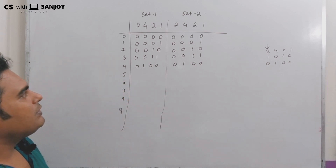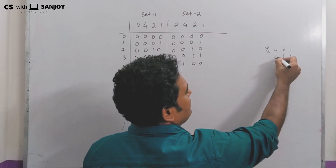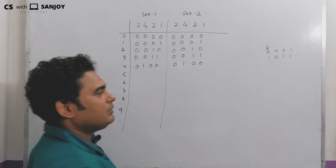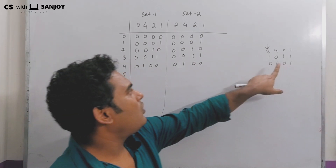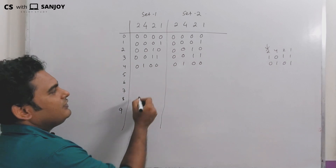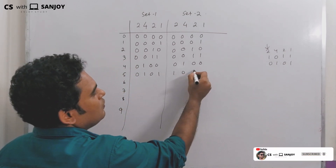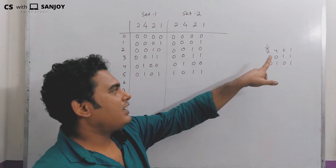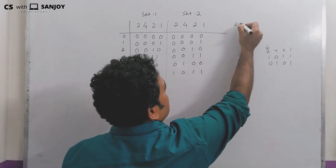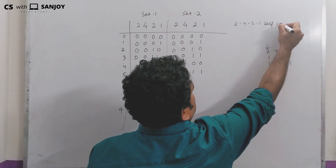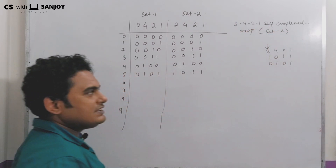For 5, there are two representations: Set 1 writes 0101 — that is the normal representation — and Set 2 writes 1011, which is not the normal form. We represent Set 2 as a self-complementing code. 2421 has a self-complementing property, and Set 2 is used to represent this self-complementing code.